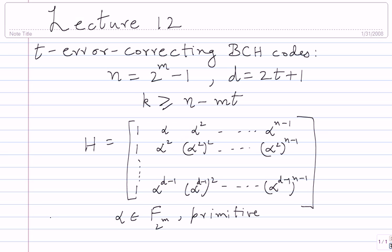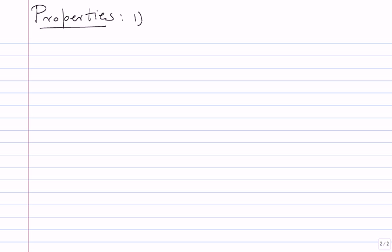To understand the code better, let's prove a few properties. The first property — which is very clear — is that BCH codes are linear. By definition, if v1 and v2 both satisfy Hv^T = 0, then v1 + v2 also satisfies that equation. So it is very obvious, though it is good to write down.